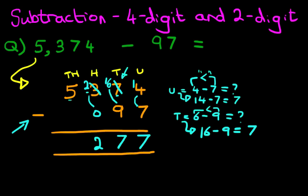The thousands, we have 5 minus 0. The answer is 5. And we have our answer.